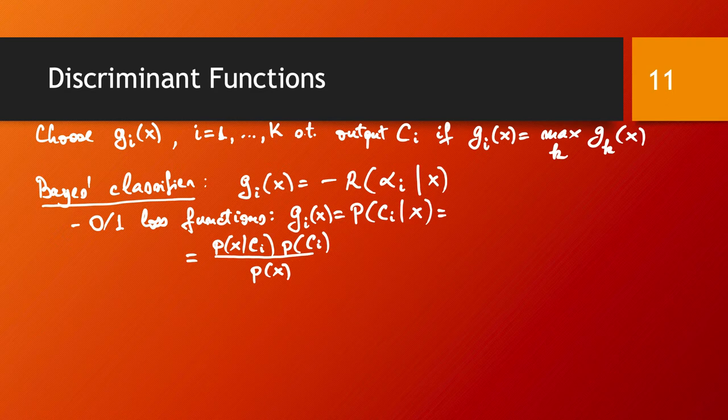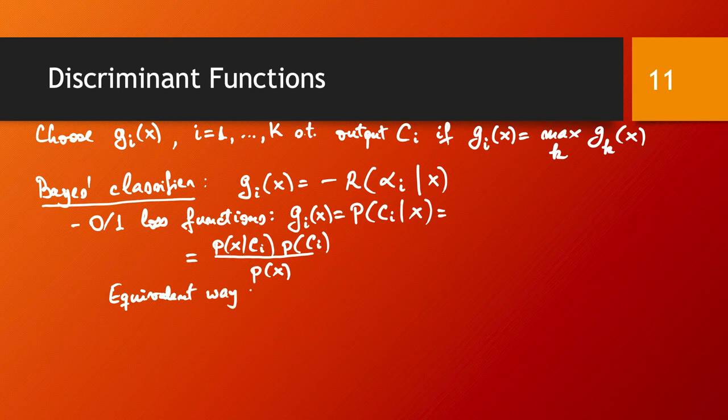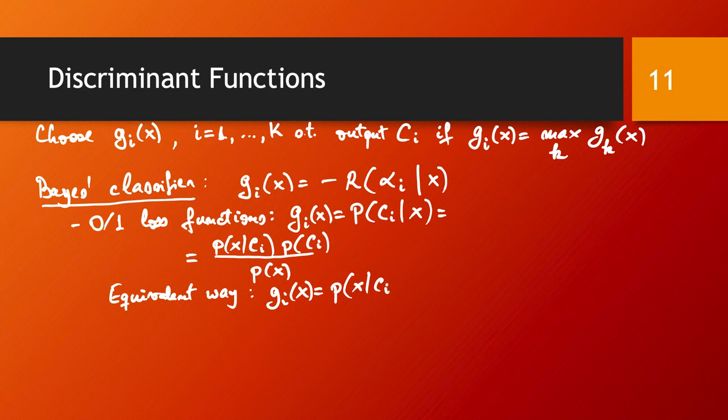Because our decision process is all about maximizing these values, it doesn't really matter that all of these values are calculated as a division by P of x. So we could just ignore this division. Another way, which is going to be just as good with a simpler function, is simply to choose g_i of x to be this product: probability of x given c_i times the probability of c_i.